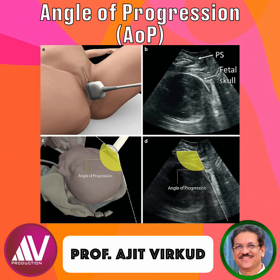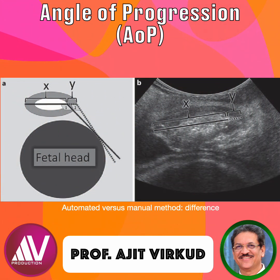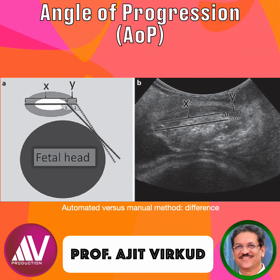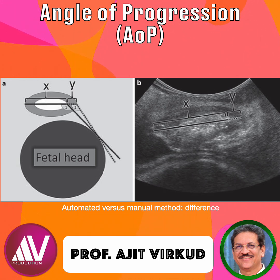Automated software is now available, eliminating the need for manual estimation. As shown in this diagram, the automated technique depicts the echogenic center of the pubic symphysis as line X, whereas the manual method includes the whole length of the pubic symphysis as line X plus line Y. Therefore, angle 1 formed by the automated technique will invariably be greater than angle 2, which is measured by the manual technique.